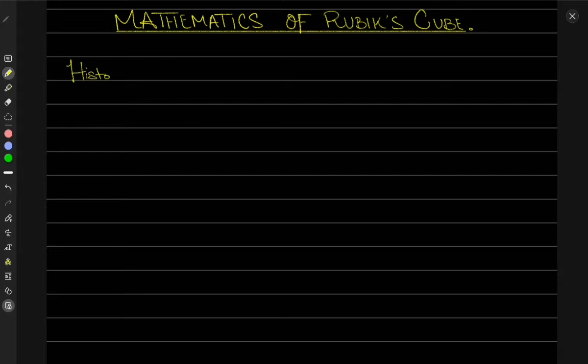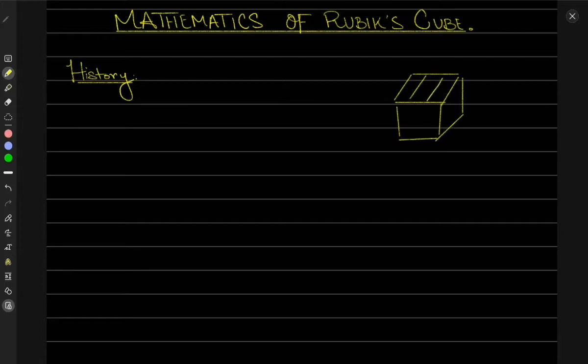We'll start our discussion by talking about the history of such a cube. Rubik's Cube is really a cube and a puzzle. You have this cube-like structure with six faces, and every face is divided into nine equal small squares. There are a total of six different colors on this cube.